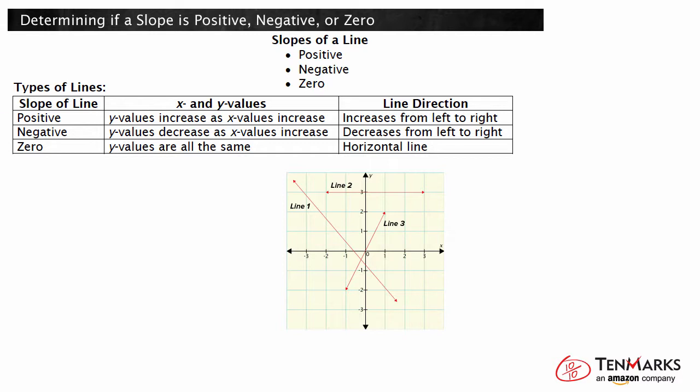A positive slope increases from left to right, and the y value increases as the x value increases. A negative slope decreases from left to right, and the y value decreases as the x values increase. A zero slope is a horizontal line and the y values are constant.